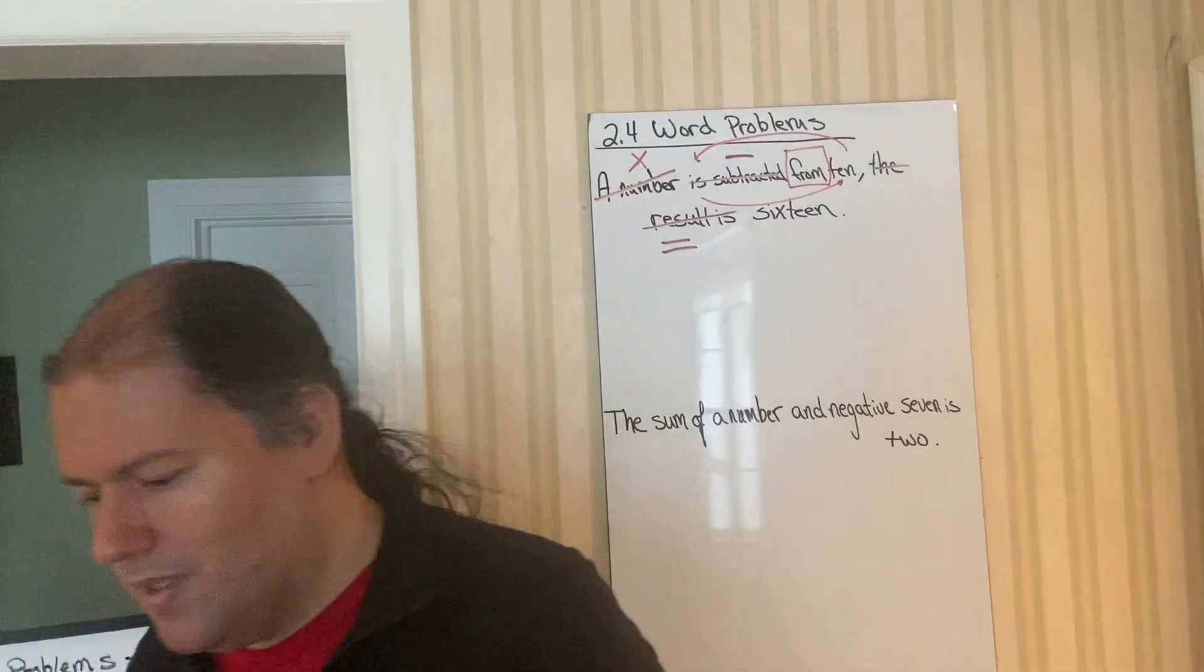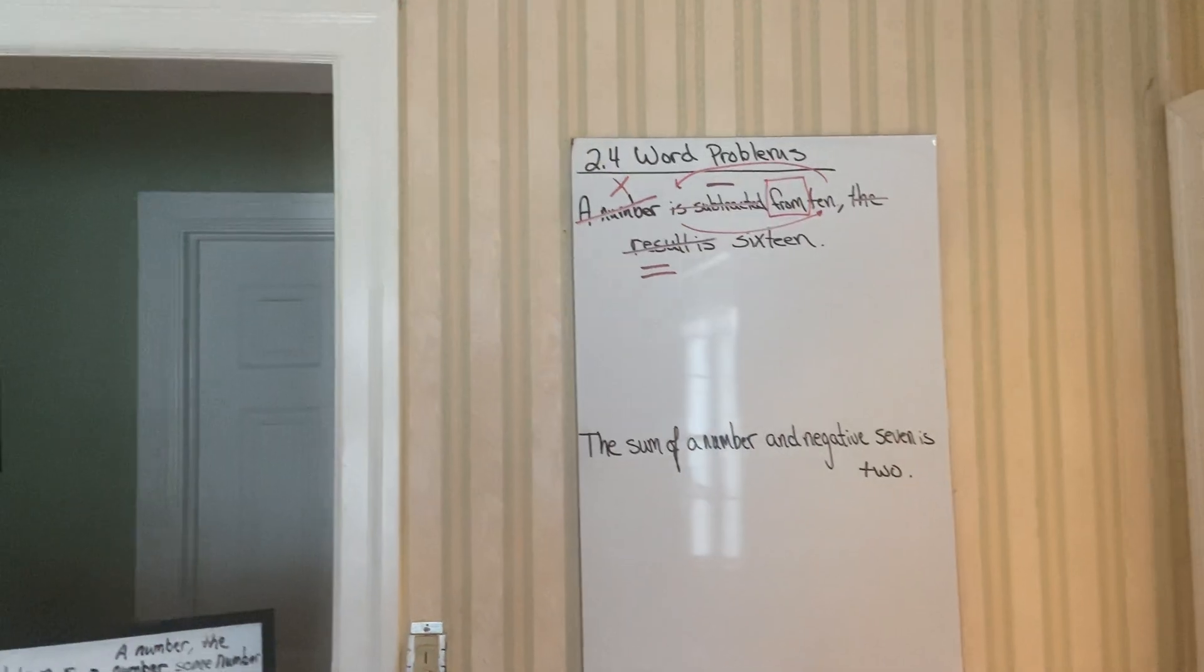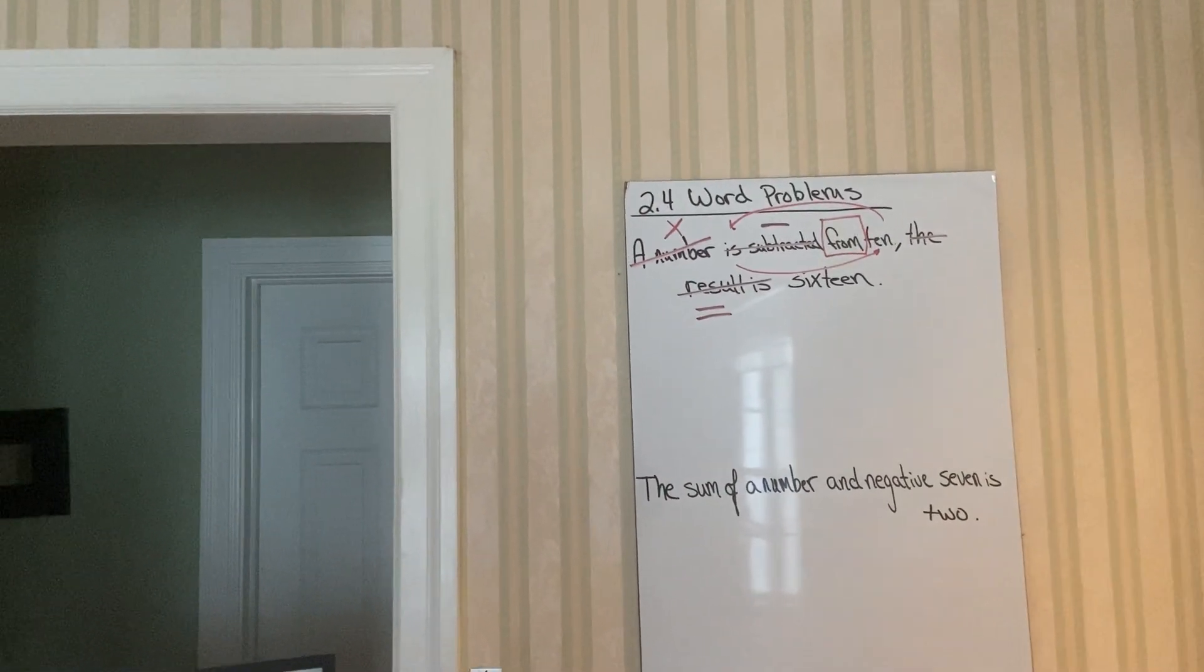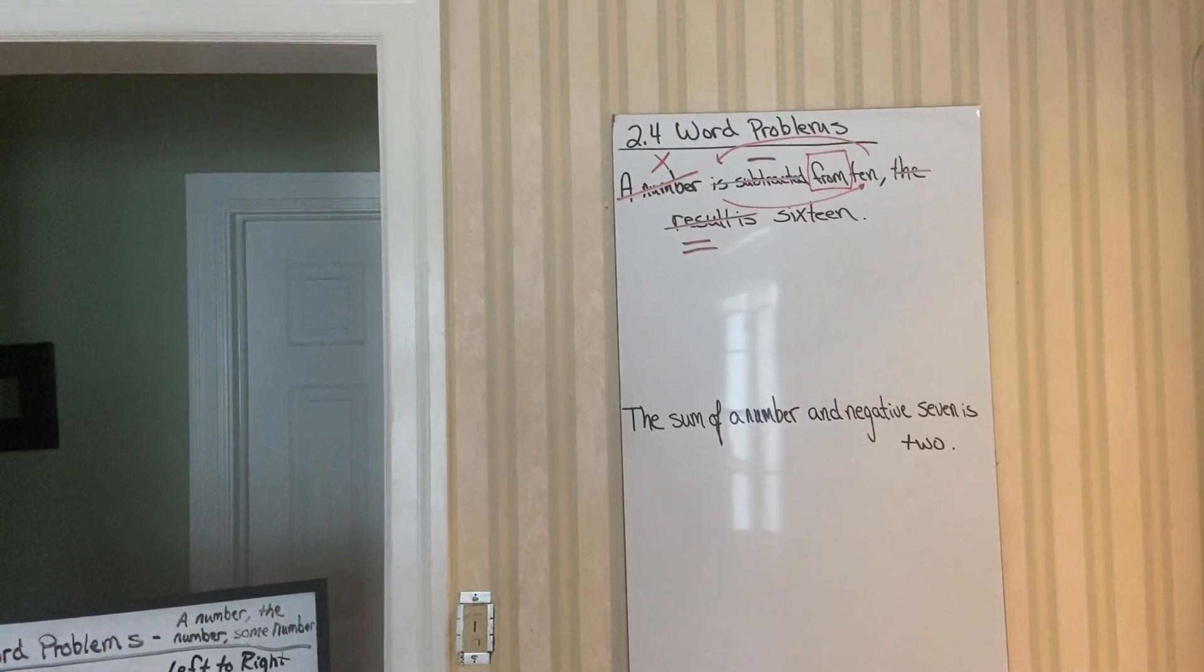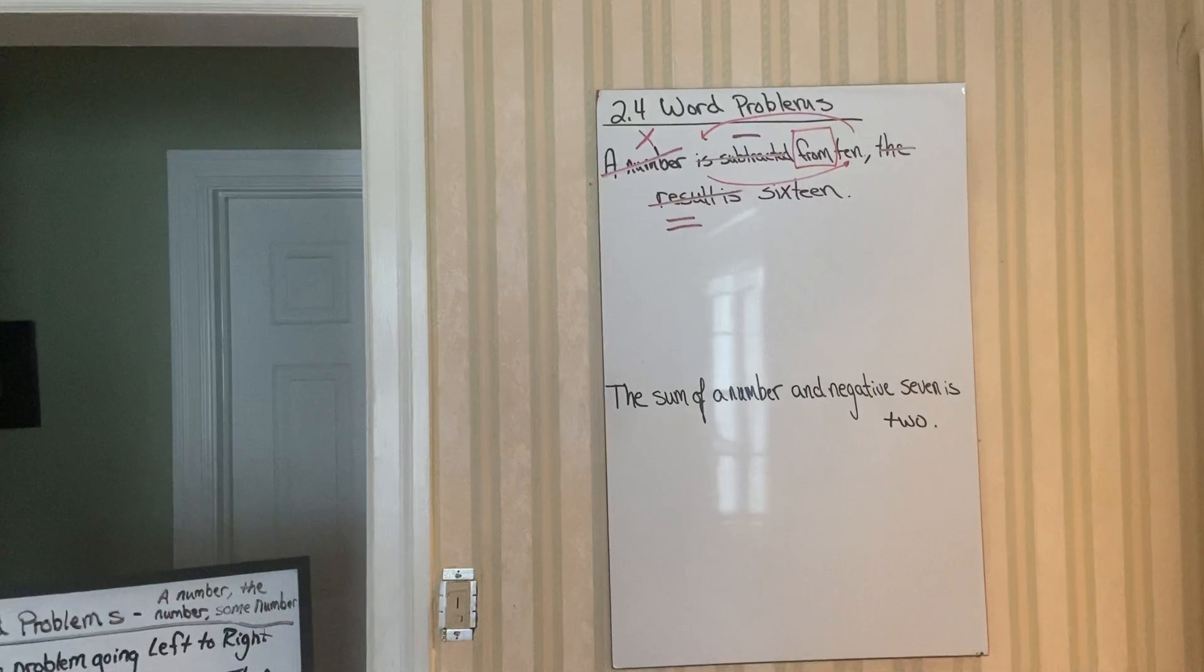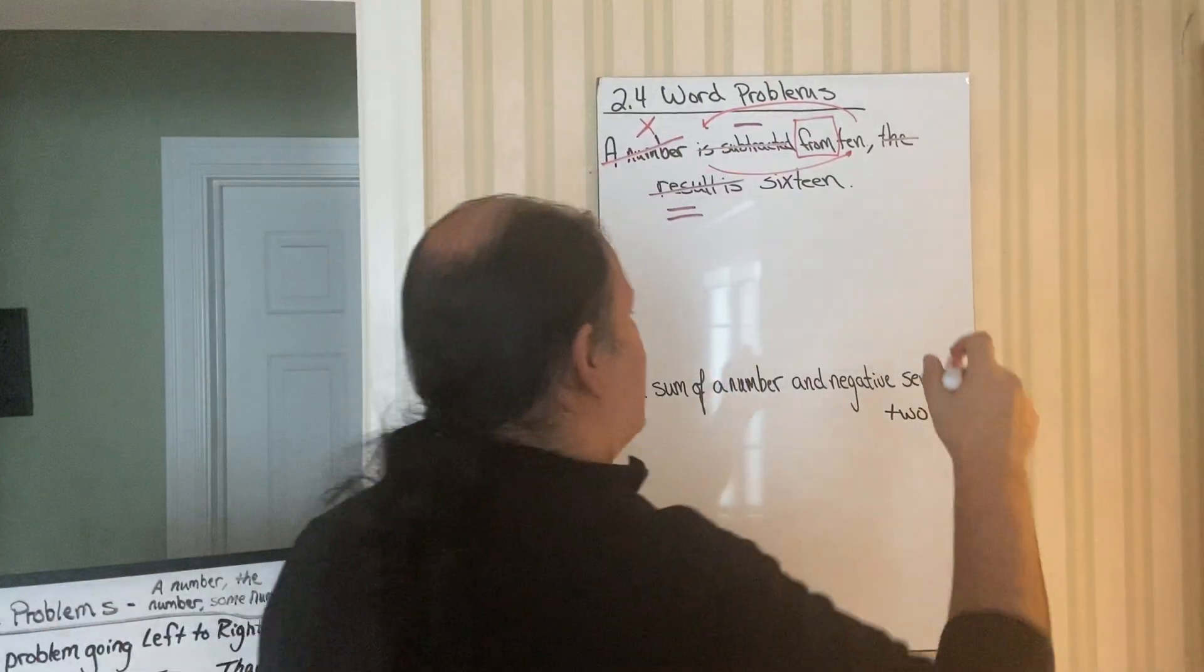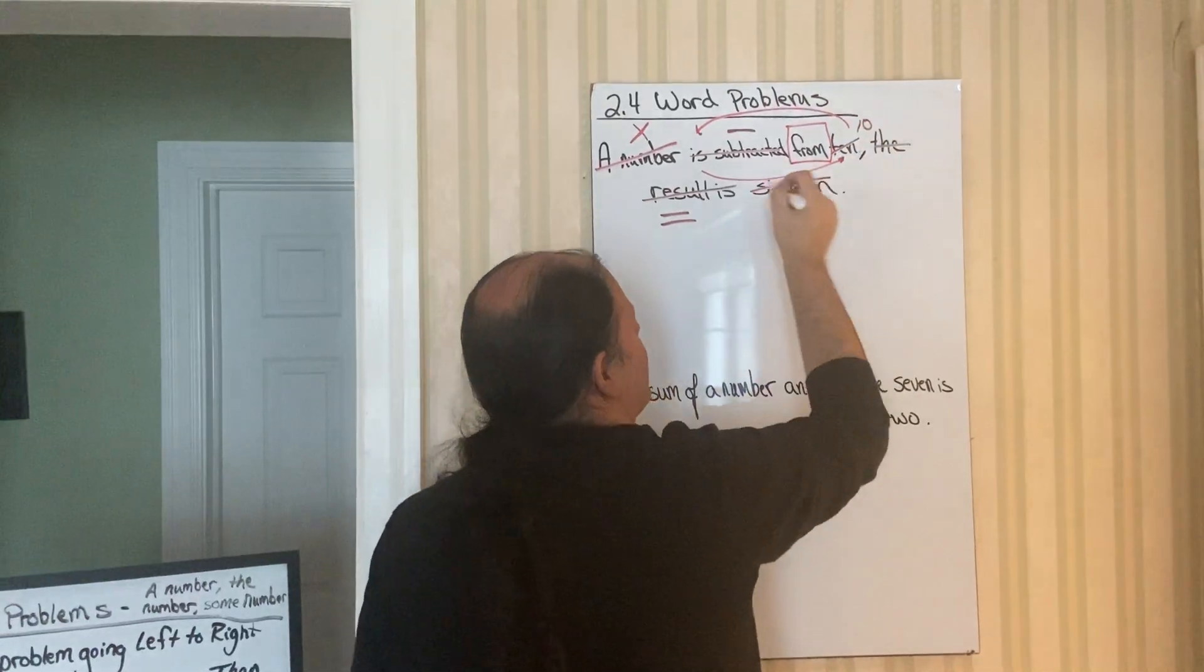Now remember, we're going to rewrite this using only letters, numbers, and operation symbols. So you probably noticed that we have the word 10 and the word 16. You can cross them out now and put them as numbers. Anytime you recognize this, you can rewrite them at any time.